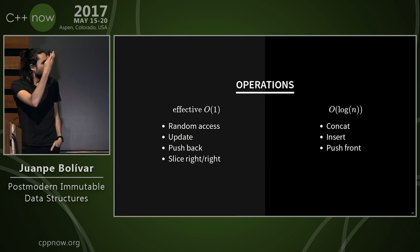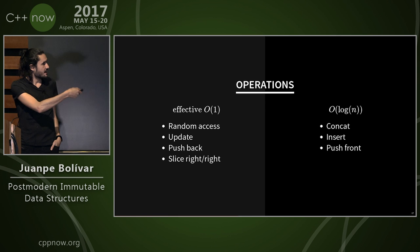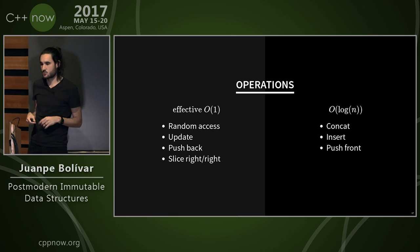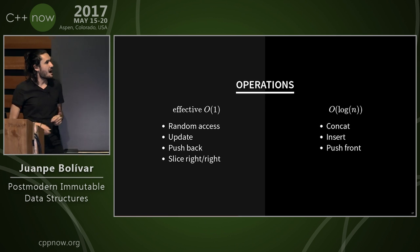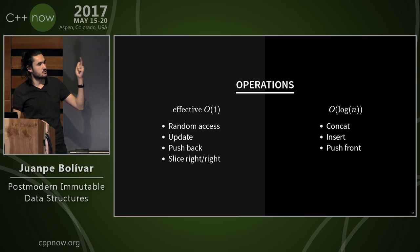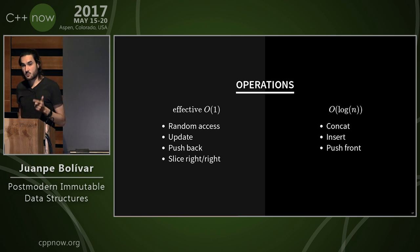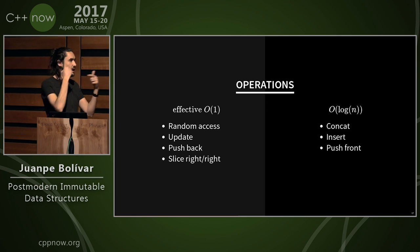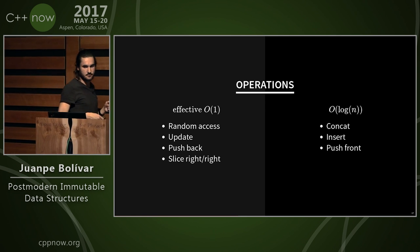Now with the relaxed radix balanced tree, we have effective O(1) for typical vector operations, but logarithmic concatenation, insertion, and push_front — which is excellent when you have really large vectors that you update interactively.